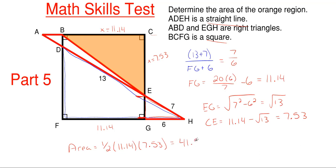And that gives me one half times 11.14 times my height of 7.53 is equal to 41.94 square units, approximately.